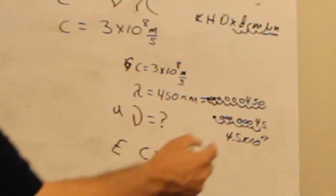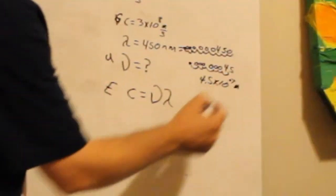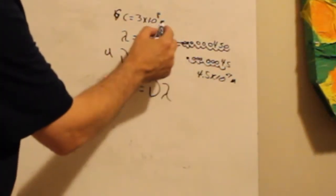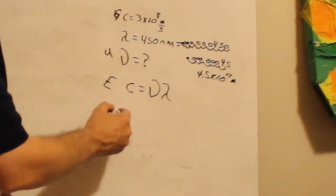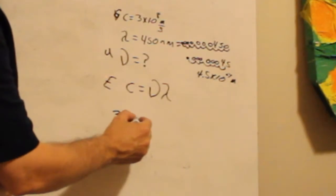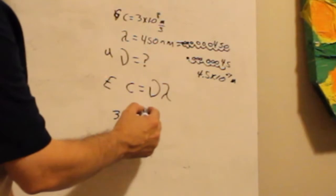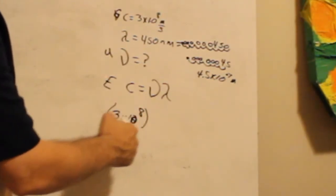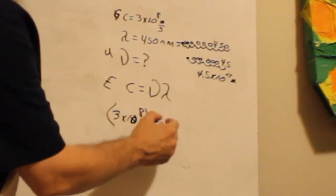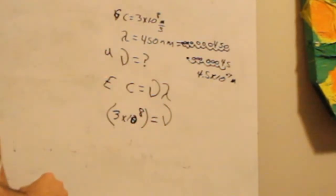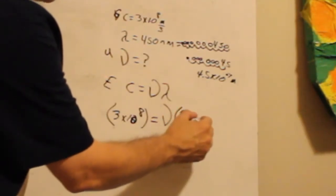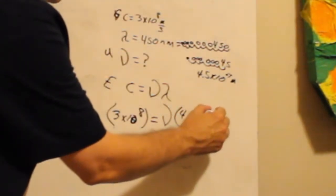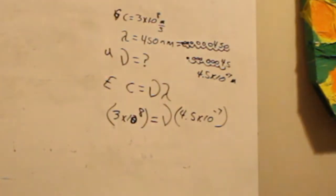So, now I'm going to take this, because this is now in meters. That's why we don't want to forget the units. So, I've got meters here and meters here, and now I can plug it in. So, C, three times ten to the eighth, I'm going to put it in parentheses, because it's all one number, equals frequency, which I don't know, times wavelength, which is four point five times ten to the negative seven.